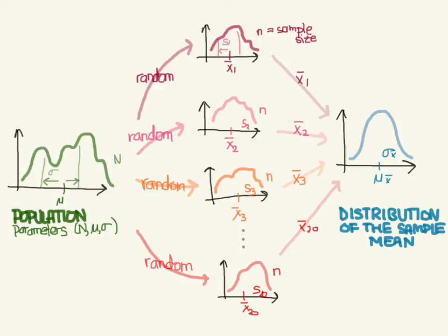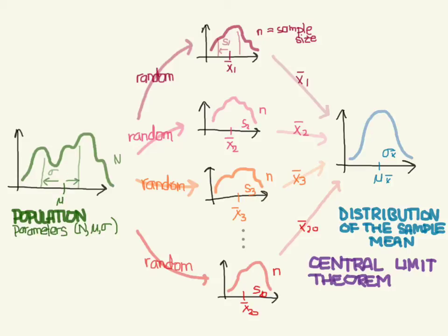This is called the central limit theorem. What the central limit theorem says is: when you have a distribution of the sample mean taken from samples of size n, all from a population with a mean of mu and a standard deviation of sigma, the following things happen. First, if you take all the possible samples, you are going to have a normal distribution — and in fact the bigger n is, the more normal it's going to be. Second, the mean mu sub x-bar is going to be equal to the population mean mu. And third, the standard deviation sigma sub x-bar is going to be equal to sigma divided by the square root of n.